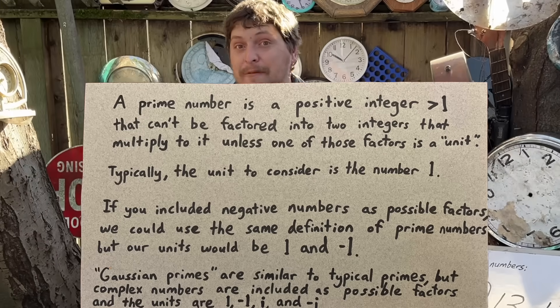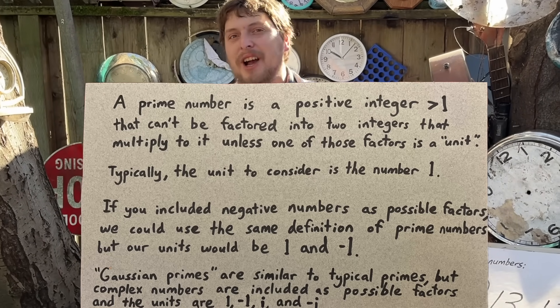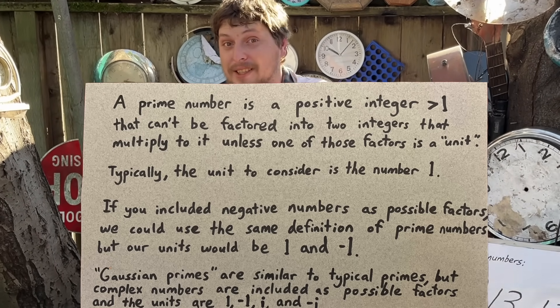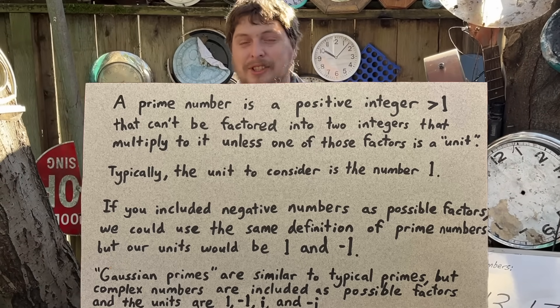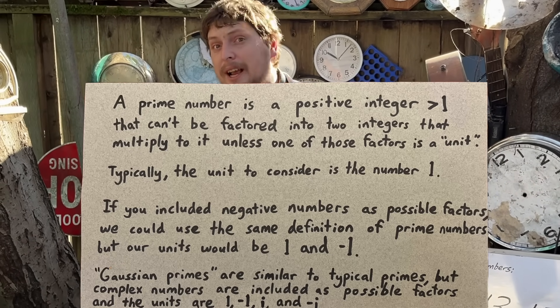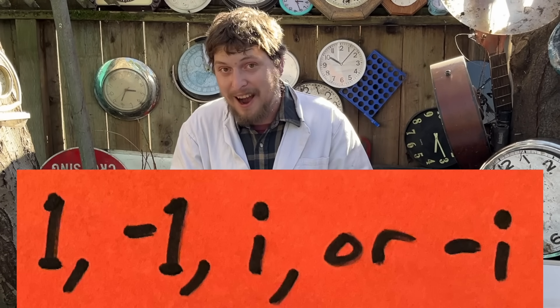Basically, the same definition as the typical type of prime numbers, just changing what we're considering as possible factors, now allowing complex numbers, and what we're considering as units, now having i and negative i included.